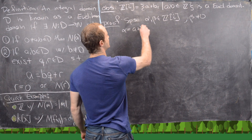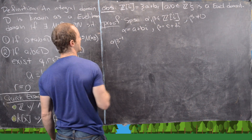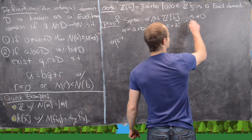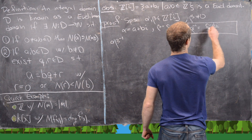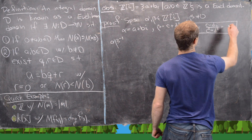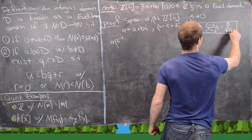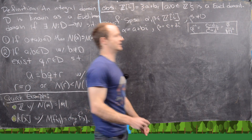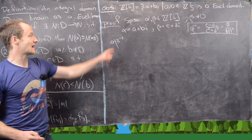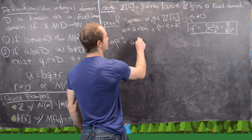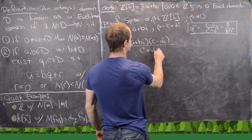We want to look at α·β⁻¹. As a reminder, β⁻¹ equals (c − di)/(c² + d²), which is β-conjugate over the modulus of β squared. That's a result from complex number multiplication. So α·β⁻¹ can be written as (a + bi)(c − di) over (c² + d²).